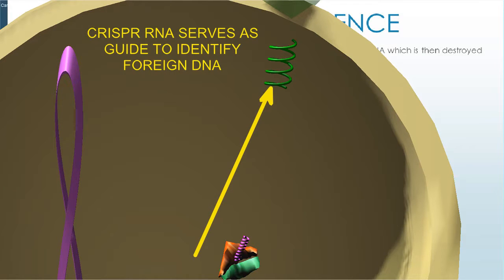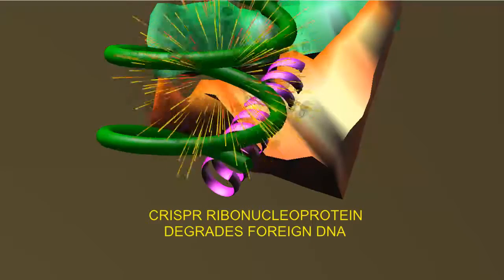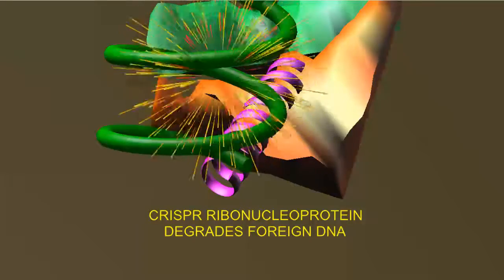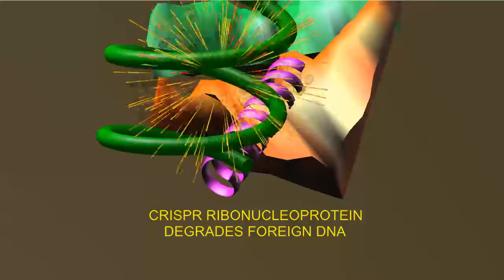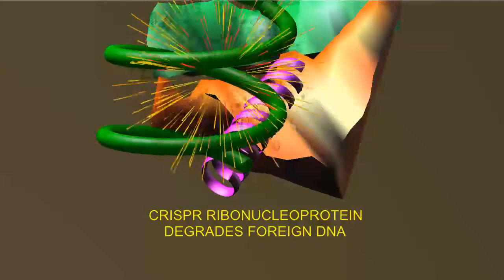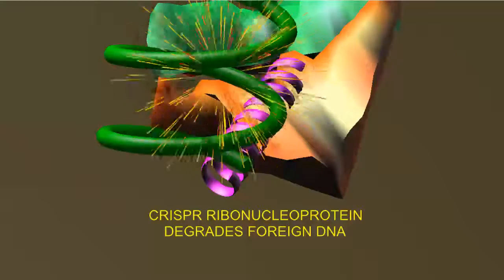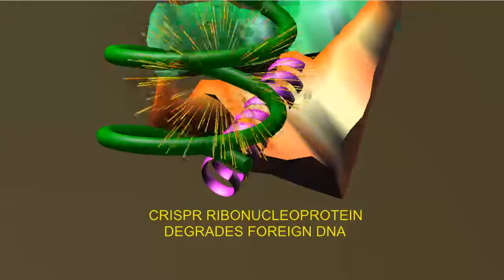the CRISPR RNA serves as a guide which allows the ribonucleoprotein complex to recognize foreign DNA. The proteins in the complex then function to degrade this foreign DNA, thus protecting the cell against a pathogen it has encountered before.